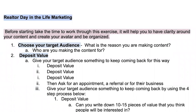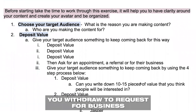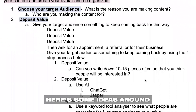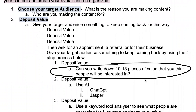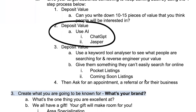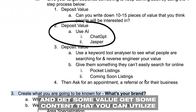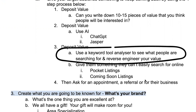You're going to deposit value to that target market. Your deposits of value are gonna come first. Before you withdraw to request for business, you wanna give value. Here's some ideas, because a lot of people get stuck on this step. If you can write down 10 to 15 pieces of value that you think people will be interested in, you can use AI — ChatGPT is really popular now, Jasper. Go in there and get some value, get some content that you can utilize. You can also use a free keyword tool analyzer to see what people are searching for, and you can reverse engineer your value around that.